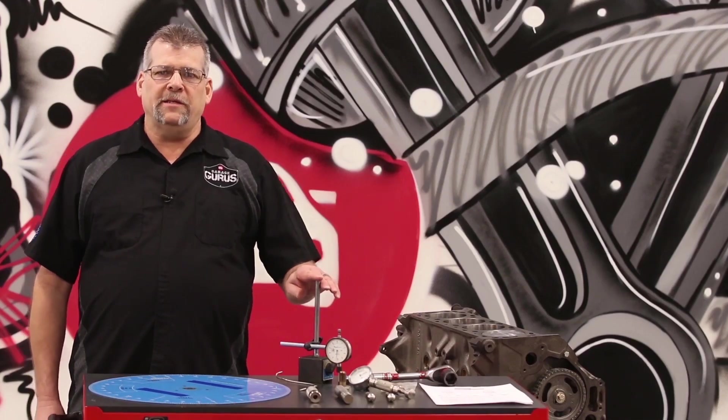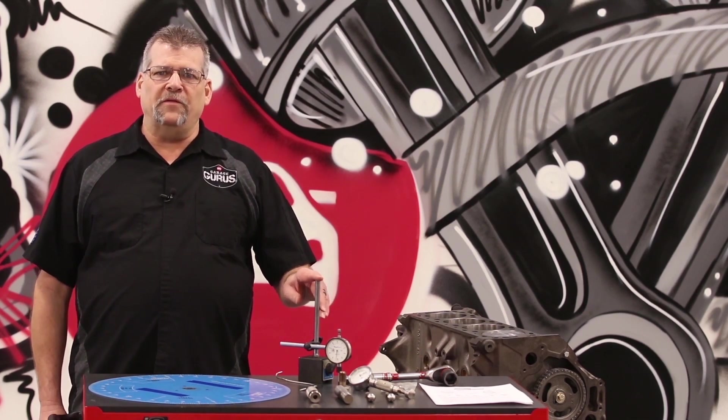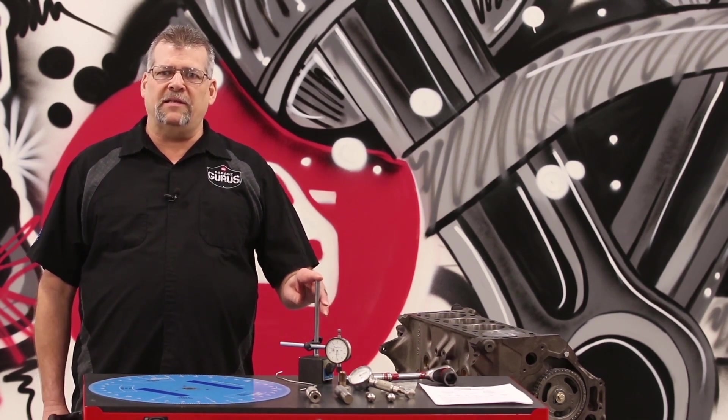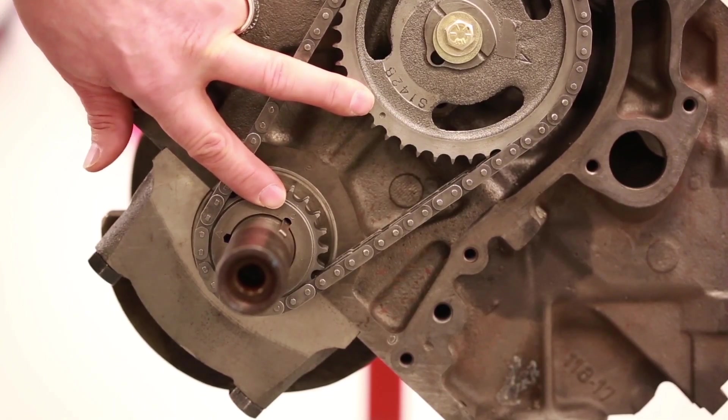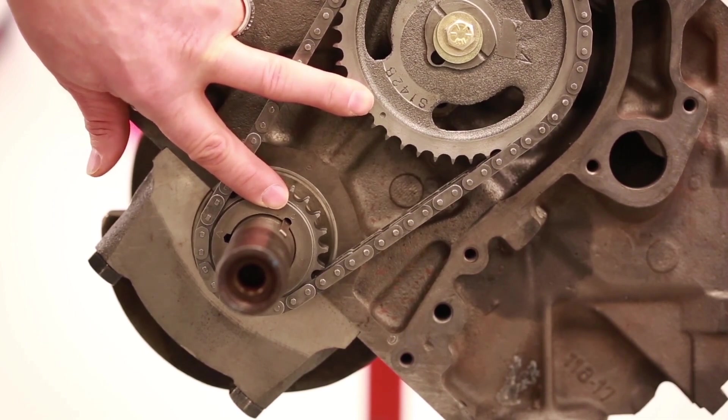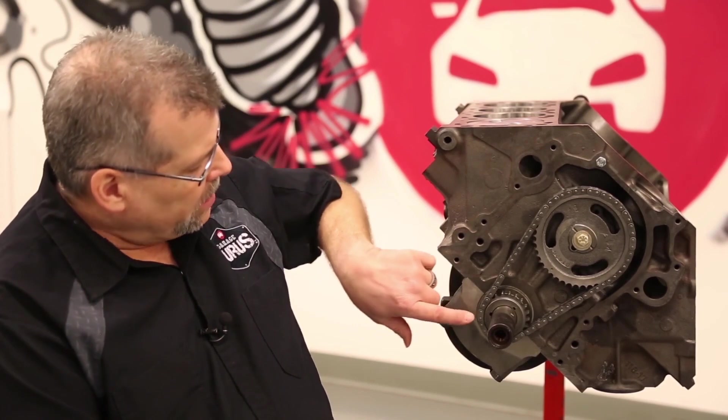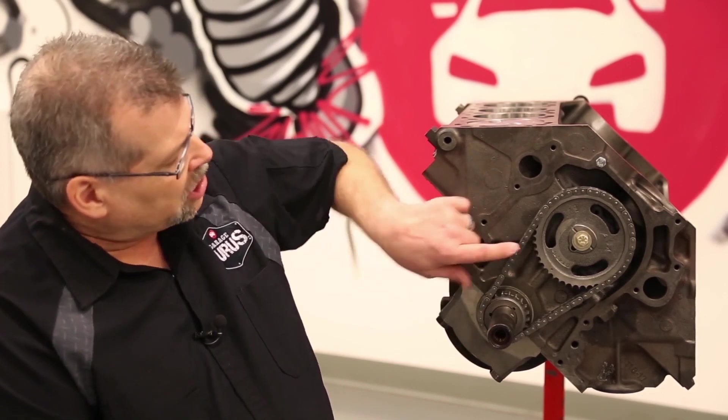I'll be using the dial indicator method for finding TDC or top dead center, which is a very important first step. As you can see, the cam and crank gears are lined up dot to dot, which is the straight up position. Some gear sets are adjustable, either using additional keyways cut into crank gear like this one here, or by using adjustable cam gears that use offset bushings or two-piece cam gears which are adjustable.